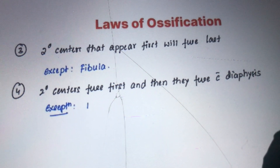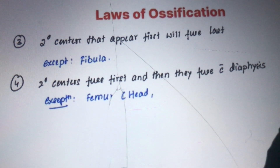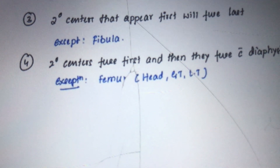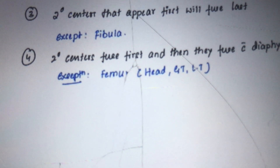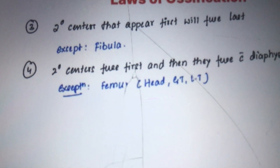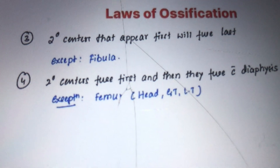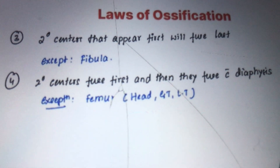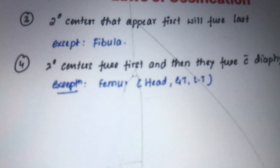The exception to the fourth law is the femur. The femur has ossification centers for the head, greater trochanter, and lesser trochanter. According to this law they should fuse together first, then with the shaft. But instead, the head, greater trochanter, and lesser trochanter each fuse separately with the shaft of the femur.